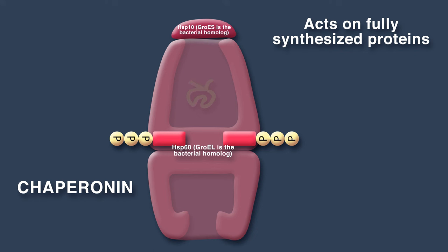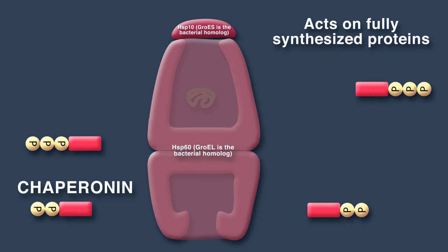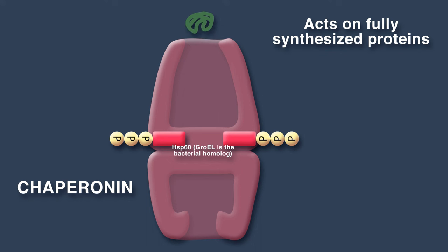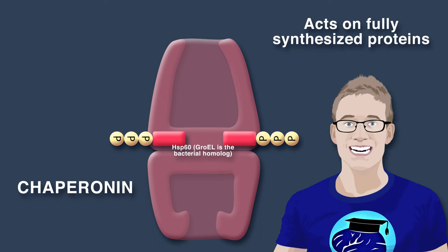15 seconds after ATP binds to the Hsp60, it hydrolyzes, weakening the complex. The binding of another ATP molecule makes the protein leave. If the protein is still not folded correctly, it can repeat the cycle.